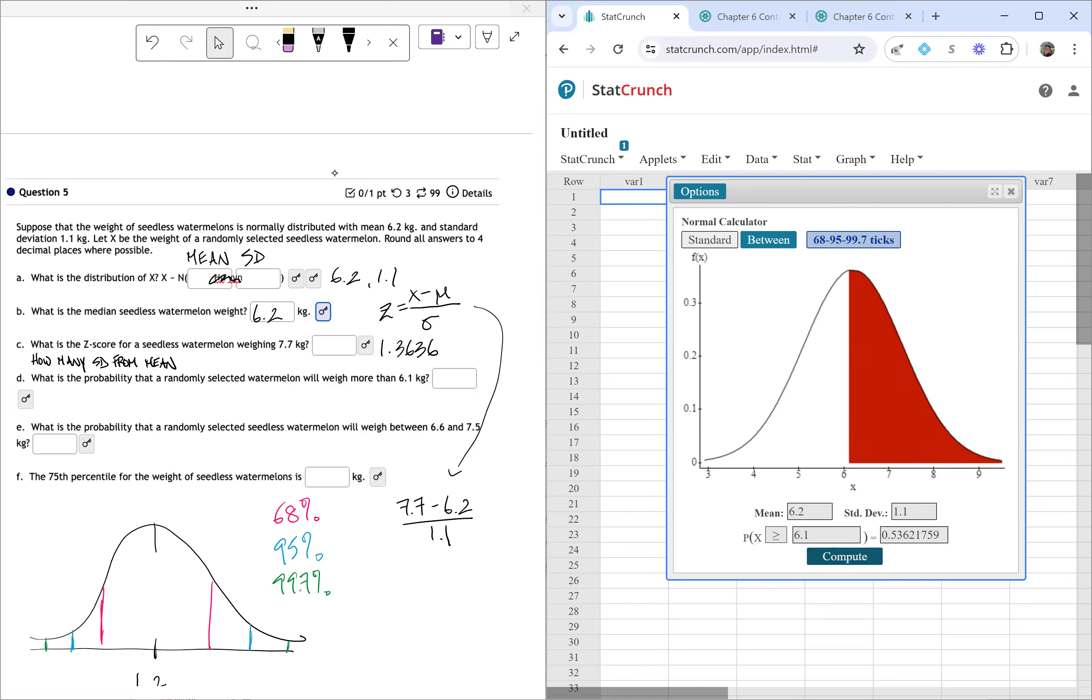When I compute, this should look like everything is colored to the right of 6.1. We can see that the right half of the graph is red. And if we look down here, we see that that probability is 0.5362. And there's a one after the two, so we're just going to keep it as 0.5362.